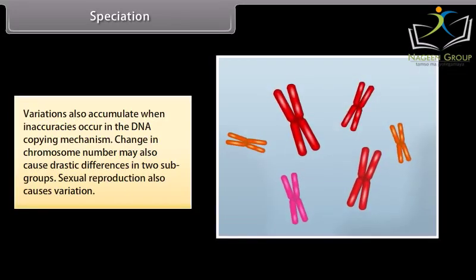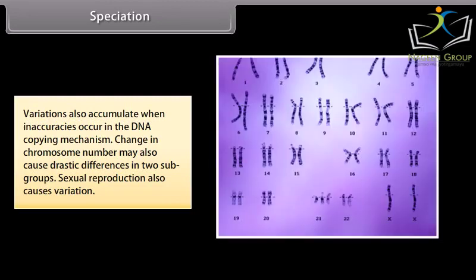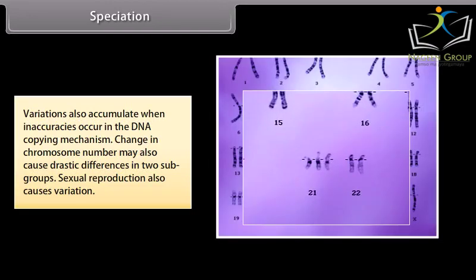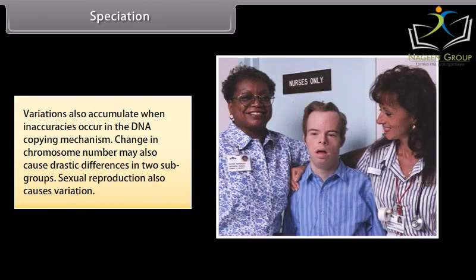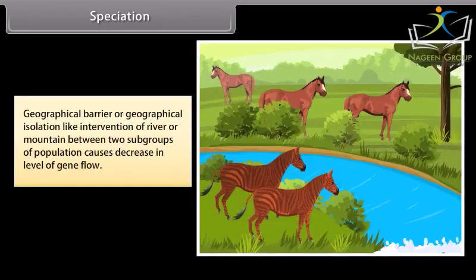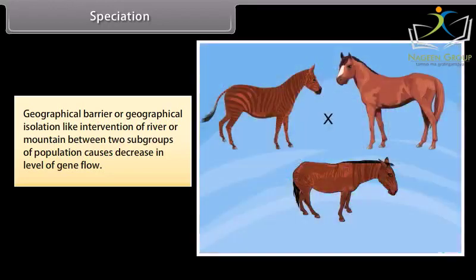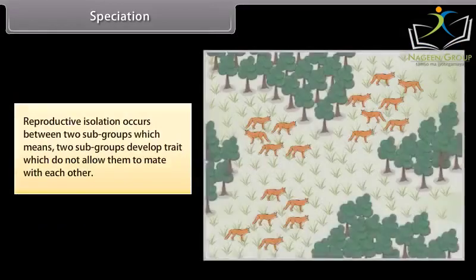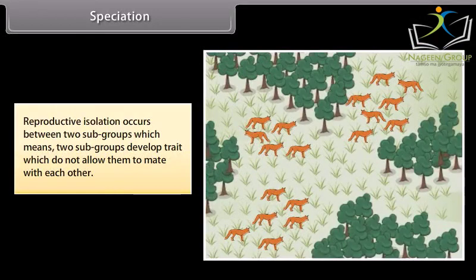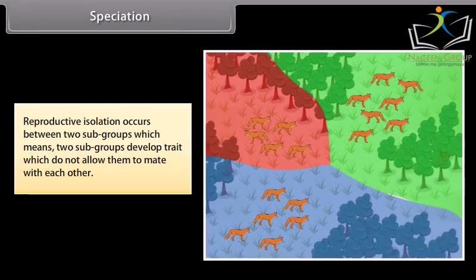Variations also accumulate when inaccuracies occur in the DNA copying mechanism. Change in chromosome number may also cause drastic differences in two subgroups. Sexual reproduction also causes variation. Geographical barriers or geographical isolation, like intervention of a river or mountain between two subgroups of a population, causes a decrease in the level of gene flow. Reproductive isolation occurs between two subgroups, meaning they develop traits which do not allow them to mate with each other.